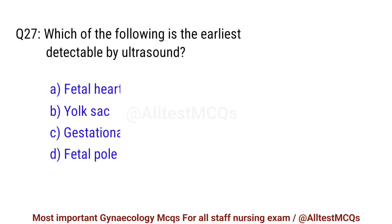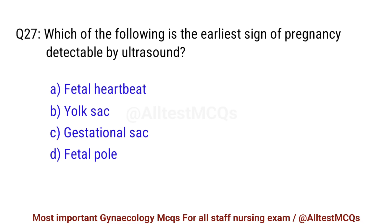Question No. 27. Which of the following is the earliest sign of pregnancy detectable by ultrasound? Right option is C. Gestational sac.